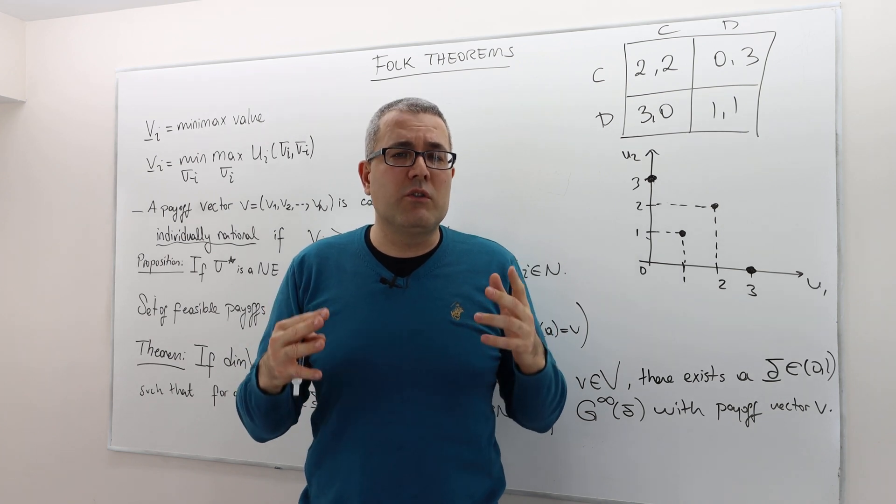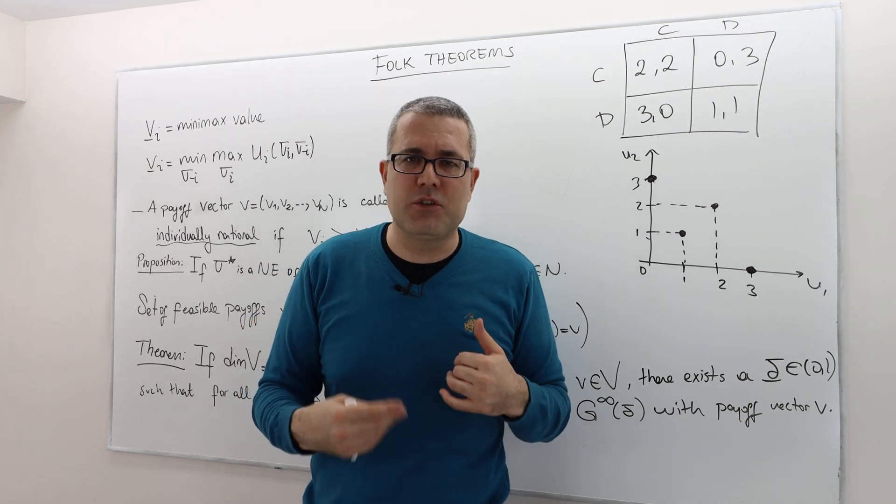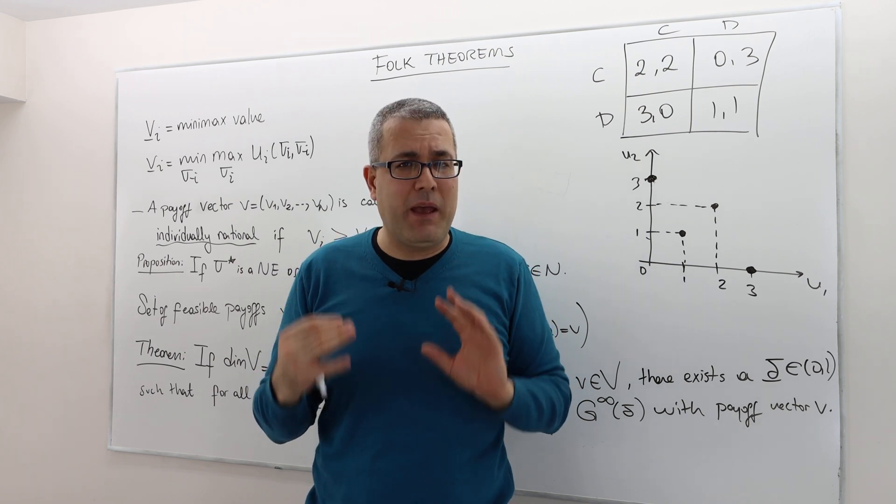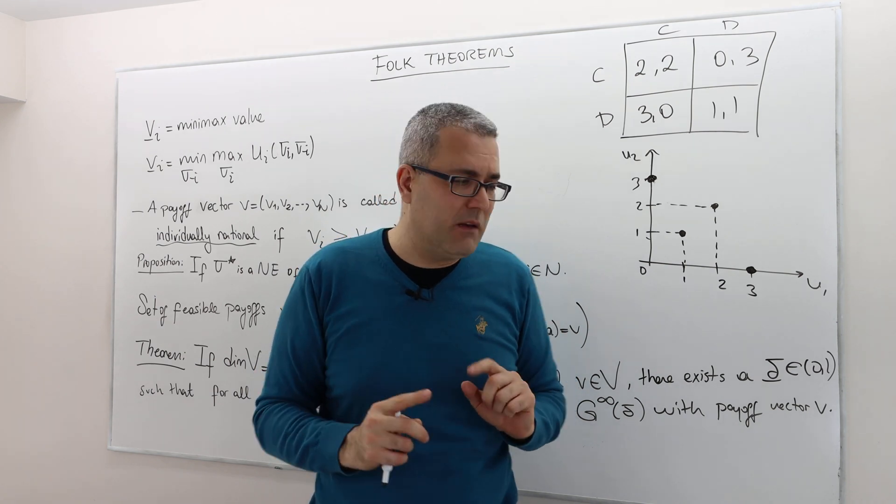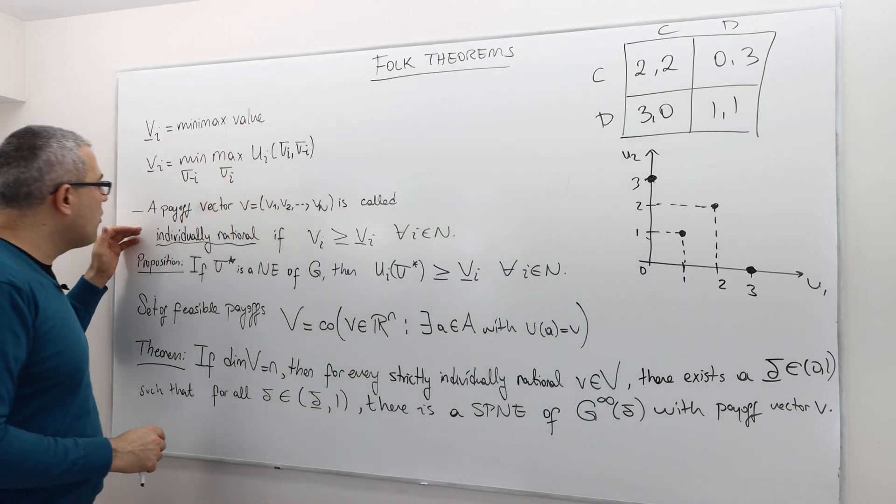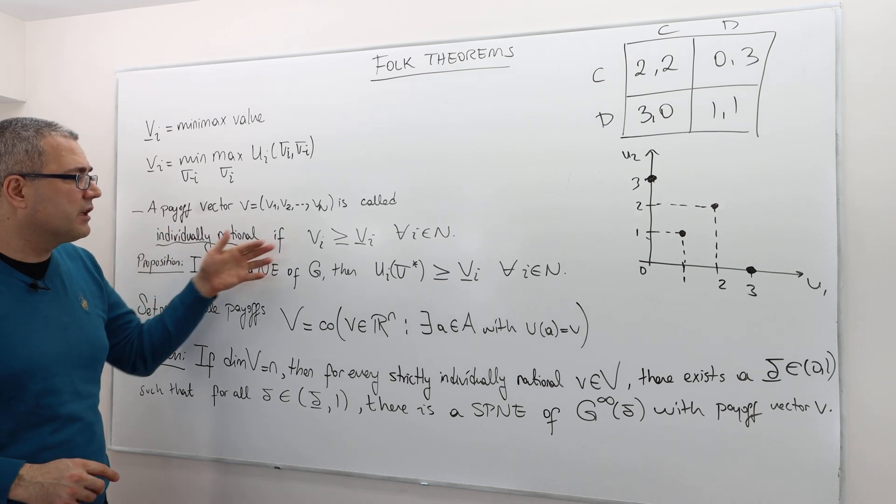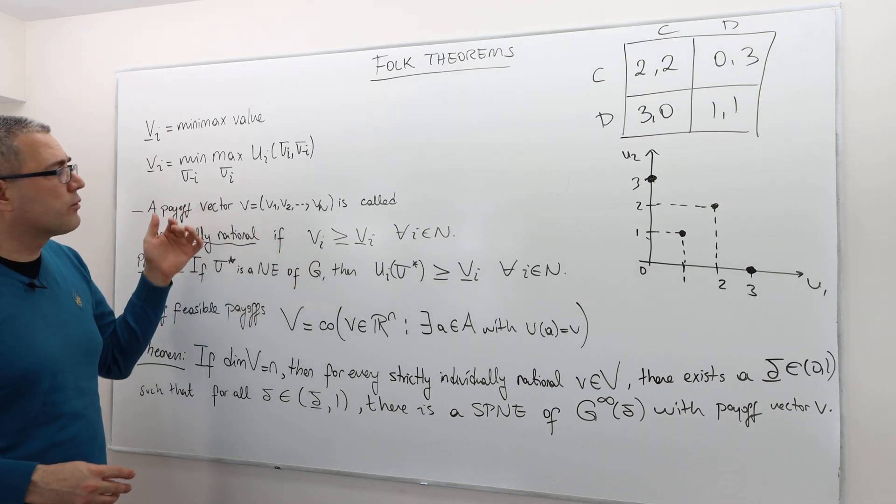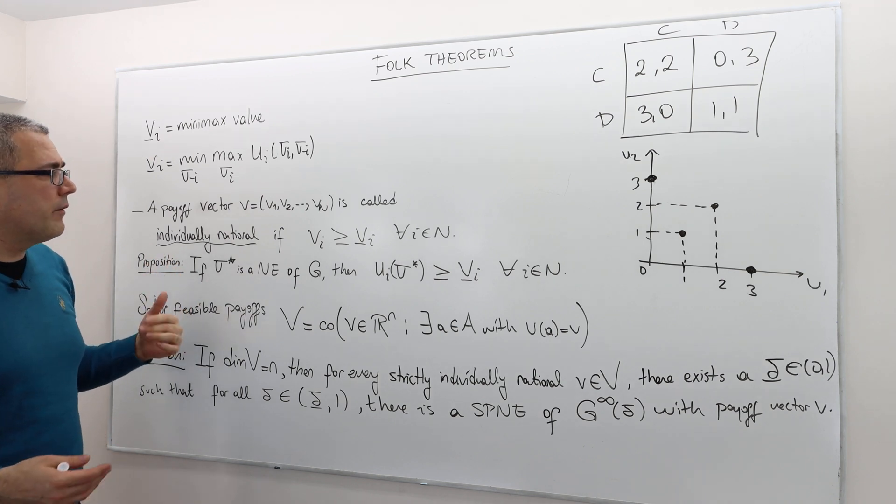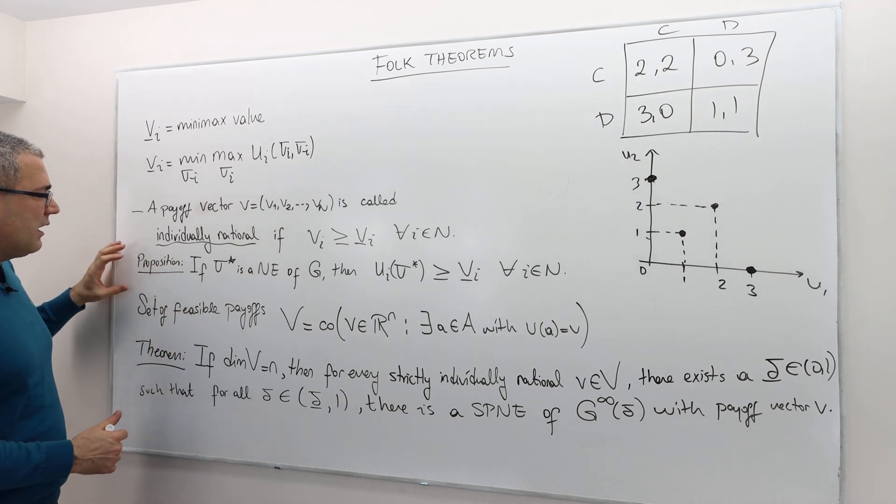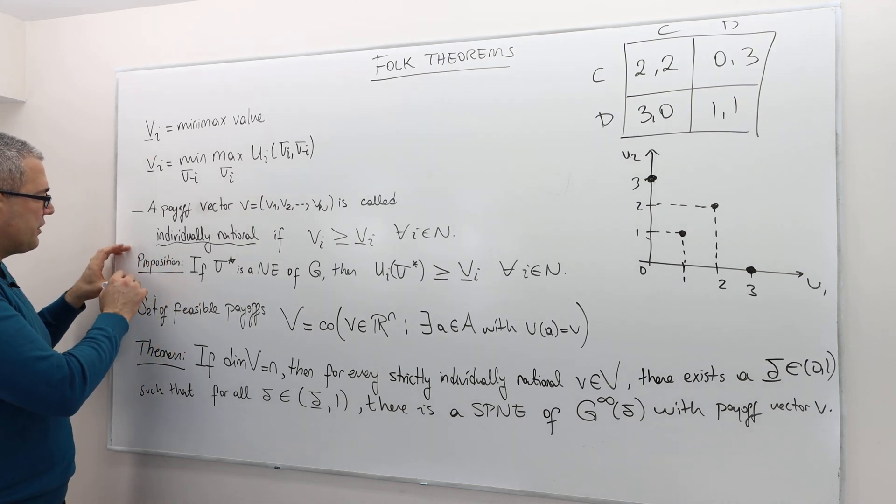All right. So that's the idea of min-max. So therefore, we call a payoff individually rational if everybody receives at least his or her min-max value. So then, well, let's talk about this proposition.